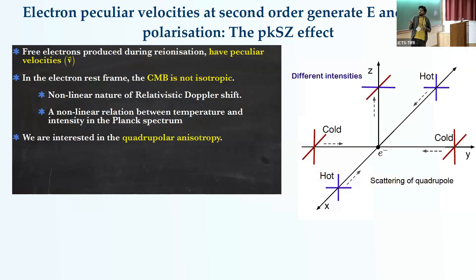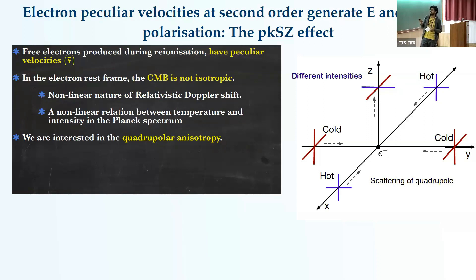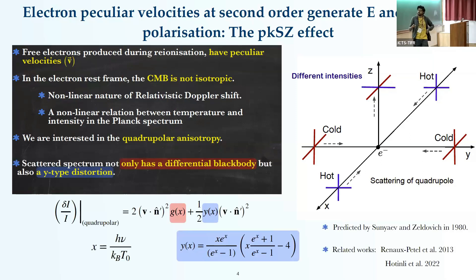We are only interested in the quadrupolar anisotropy, shown in this figure. You can see that photons coming to this electron from one direction are hotter and from another are colder. Thompson scattering of these photons with the electrons creates polarized light even if the initial radiation was unpolarized. The scattered spectrum has not only a blackbody spectrum but also a y-type distortion.